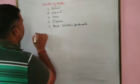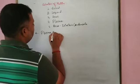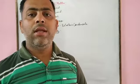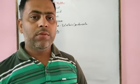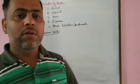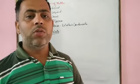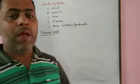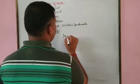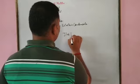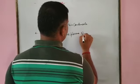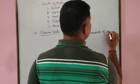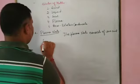We will now discuss the fourth state of matter, that is plasma. The plasma state is a mixture of ions and electrons. In plasma state, the atoms are ionized to produce ions and free electrons. This is the content of the fourth state of matter, that is plasma state, which consists of ions and free electrons.